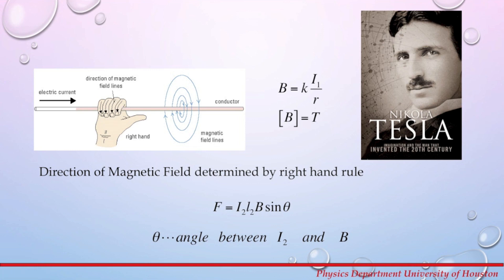If you place a second wire that carries current I2 close to the first wire, the magnetic field of the first wire will produce a magnetic force on the second wire. This magnetic force will have the magnitude F = I2 L2 B sinθ, where B is the field due to the first wire, θ is the angle between the current of the second wire and the magnetic field of the first wire, and I2 and L2 are the current and length of the second wire respectively.